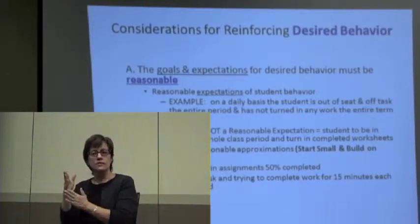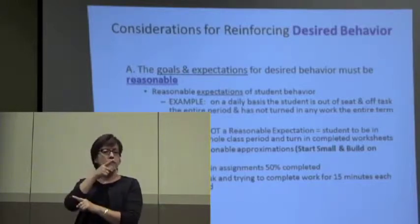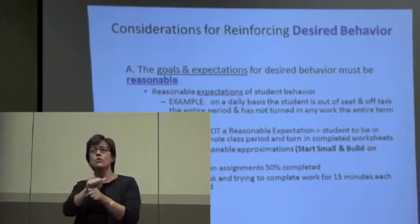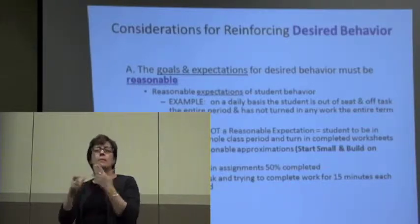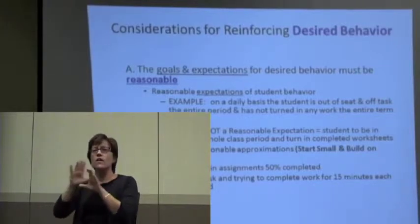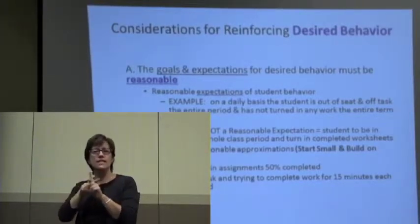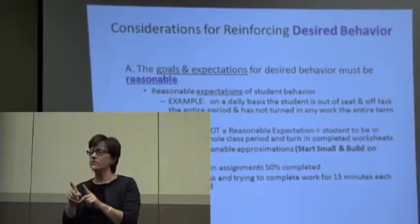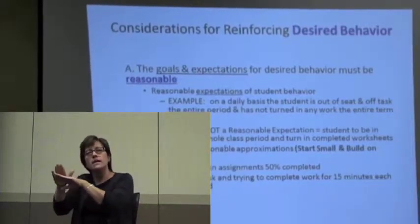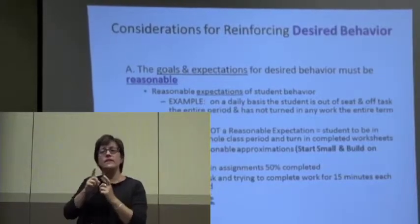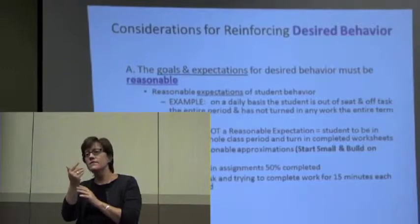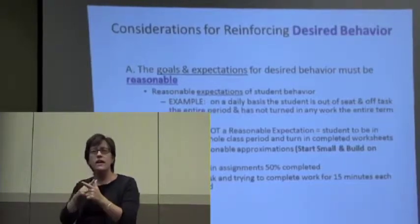For example, a student who's out of seat and off task the entire period, turning in no work all term — it's probably not reasonable to expect them to sit the whole class and turn in all assignments. We've got to get over that. It's more reasonable to start small and build success — turn in 50% of assignments and stay on task for 15 minutes each period. Reinforce that in the beginning, then take steps forward.